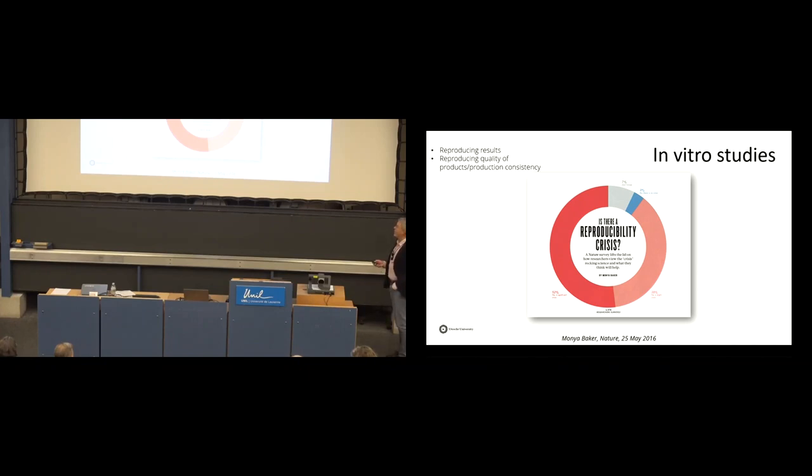And we had a very nice example of that. I have to mention, it is also not only important, this reproducing results, but also reproducing quality of products or production consistency. So, when you use the cell lines, for instance, for the production of vaccines, et cetera, it's very important that you use always a nice cell of which you know what it actually is.